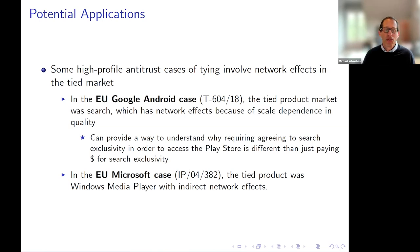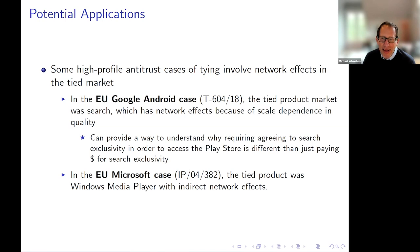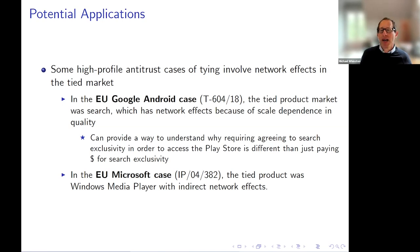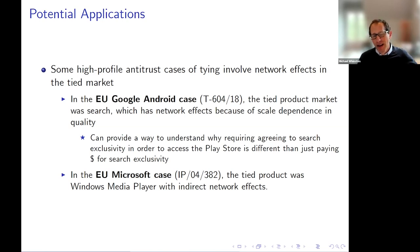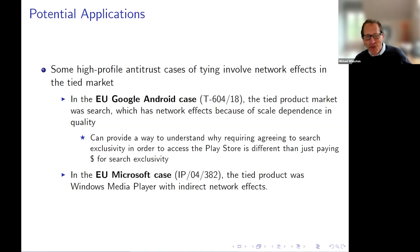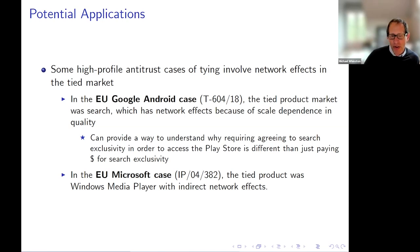There are differences between the model and that situation — we have distributors, not single product consumers, for example. But one interesting thing is: when you think about the MADA, you might ask yourself, why did Google tie the Play Store in order to get search exclusivity, as opposed to just paying for exclusivity? Potentially the model gives some explanation for why those two things are different — if you just pay, you're not taking advantage of unexploited surplus. The network effect in that case is that search is a product where there are direct network effects: the more people search on a search engine, the better the quality of the search engine will be.